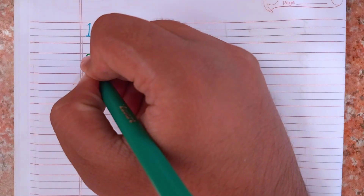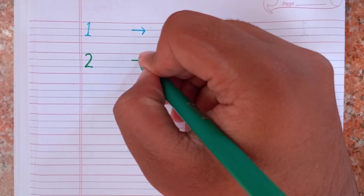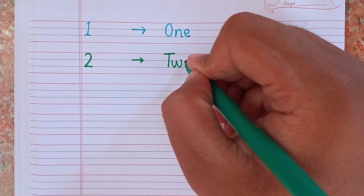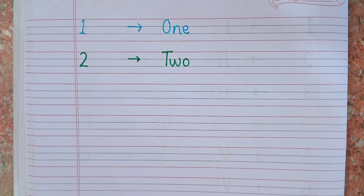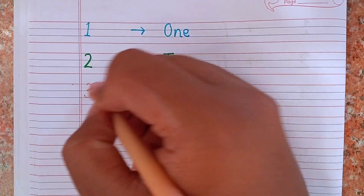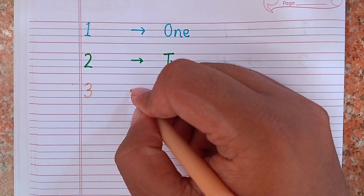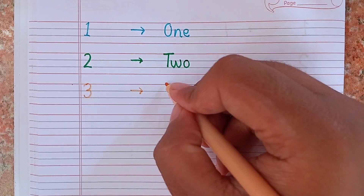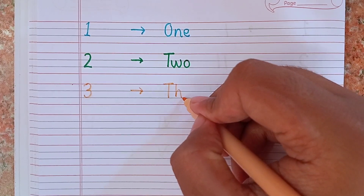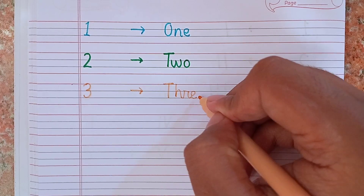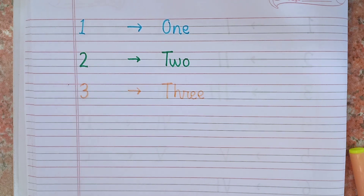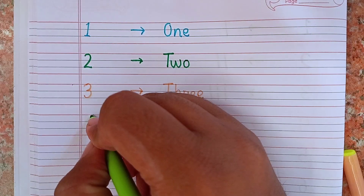After 1, I will write 2. This is 2. Now I will write the spelling of 2: T W O. Remember the spelling kids, T W O. Now I will write 3. This is 3. I will write the spelling of 3: T H R E E. Remember 1, 2, 3.